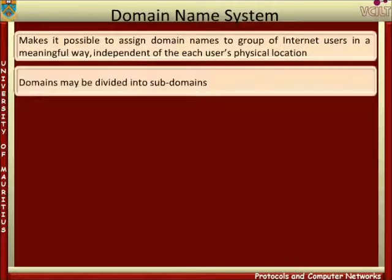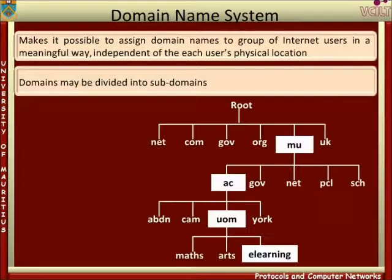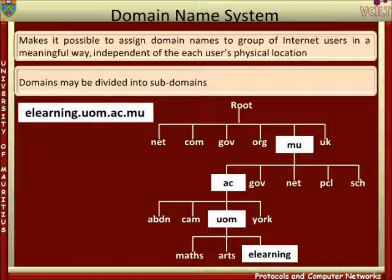The Internet is divided into domains and an authority in each domain is responsible for allocating names. However, the domains may be divided into subdomains, and the responsibility of allocating subdomain names may be delegated to other authorities. In this way, the names form a tree structure as shown in the figure. The full names of hosts are written as a sequence of words separated by full stops, and each word refers to a domain or subdomain.